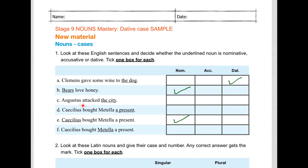This one. Augustus attacked the city. That's straightforward stage two accusative. And we've got two left, D and F. This one and this one. We've got Caecilius being the subject here, the nominative. So he's buying Metella a present.